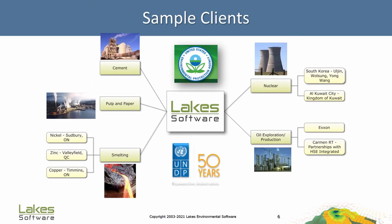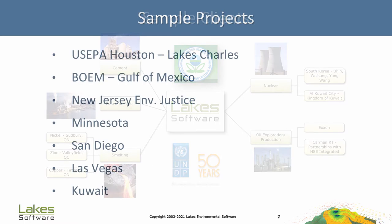Who uses AQMIS? Everyone! Industrial clients from the pulp and paper, mining and smelting, nuclear, and oil and gas industries use AQMIS to manage their environmental operations. Consultants use AQMIS to manage data more effectively for their clients. And regulatory bodies, like the United Nations and United States EPA, employ AQMIS to look at all the facilities in their jurisdiction.